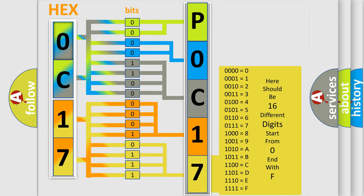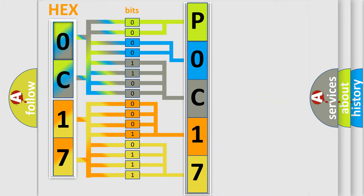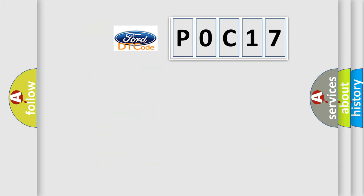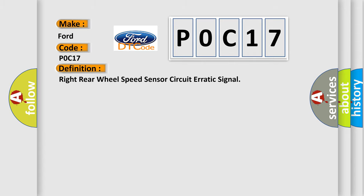We now know in what way the diagnostic tool translates the received information into a more comprehensible format. The number itself does not make sense to us if we cannot assign information about what it actually expresses. So, what does the diagnostic trouble code P0C17 interpret specifically for Infiniti car manufacturers? The basic definition is: Right rear wheel speed sensor circuit — erratic signal. And now this is a short description of this DTC code.